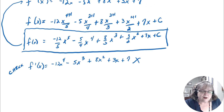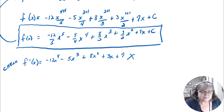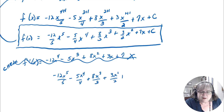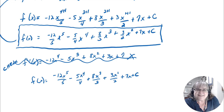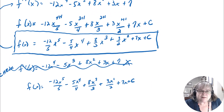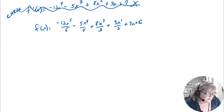Some students ask: is it okay to write the coefficient as a fraction under the variable, like -12x⁵/5 instead of -(12/5)x⁵? Yes, both forms are fine — teachers and books sometimes prefer one over the other. Some automated homework grading systems want the coefficient out front; some don't care. Check what your teacher or software requires.